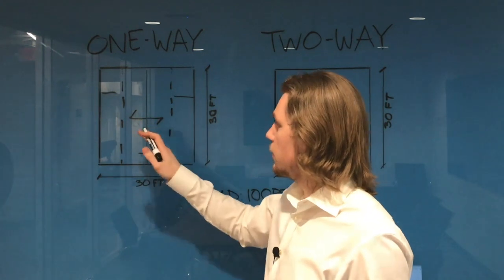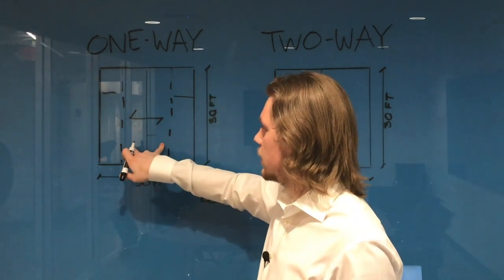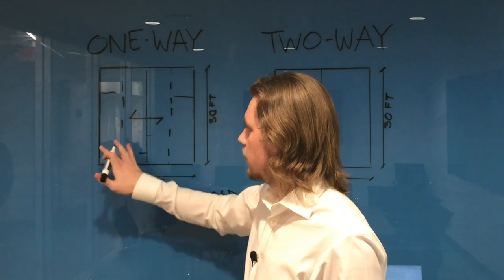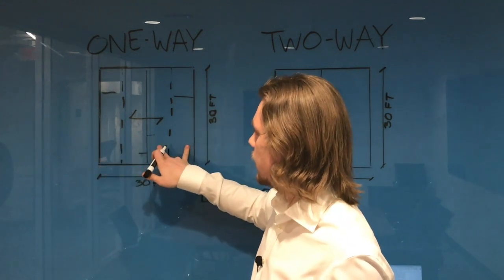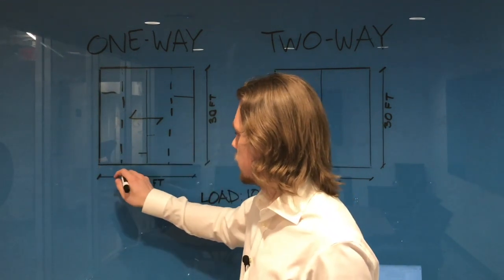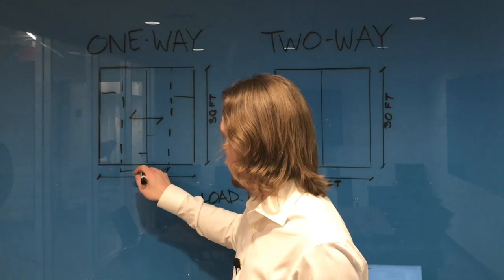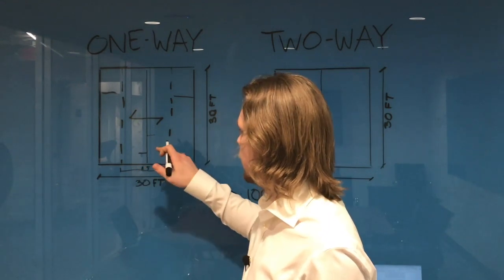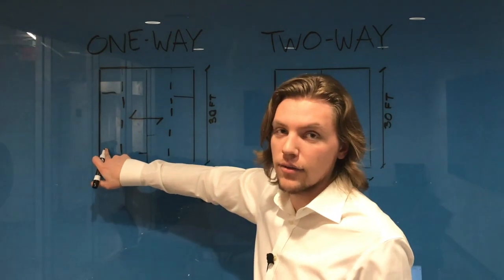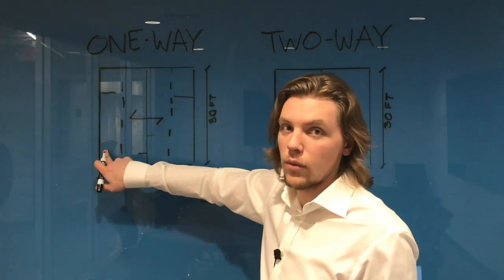So for this example, this beam here is taking seven and a half feet of tributary width on this side and seven and a half feet of width on this side. So this is actually 15 feet. And then these last two corner beams are taking seven and a half feet of tributary width for the one-way slab.